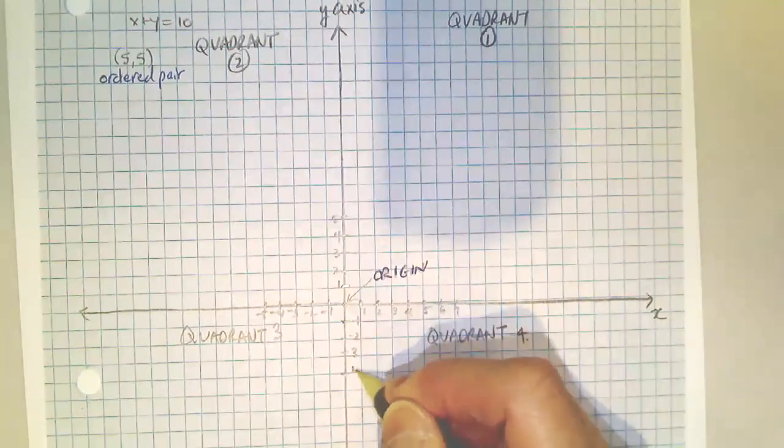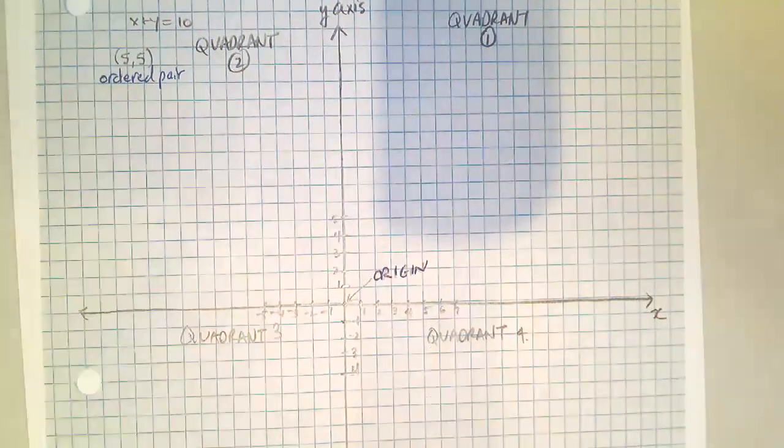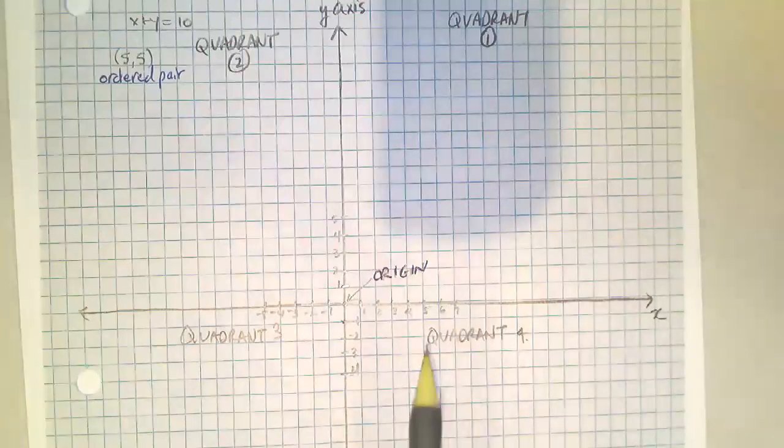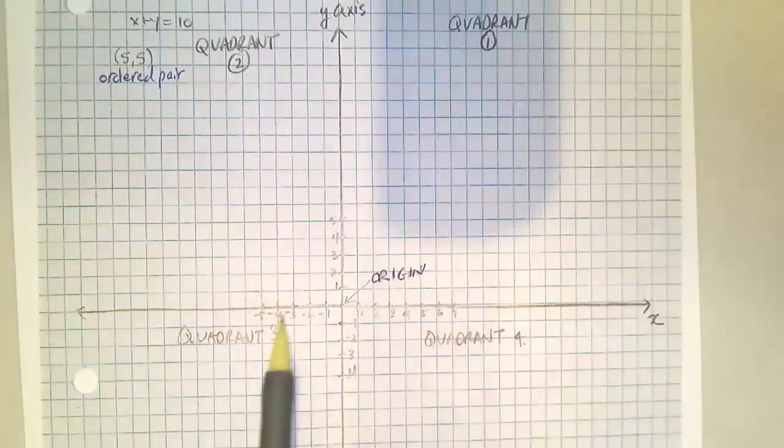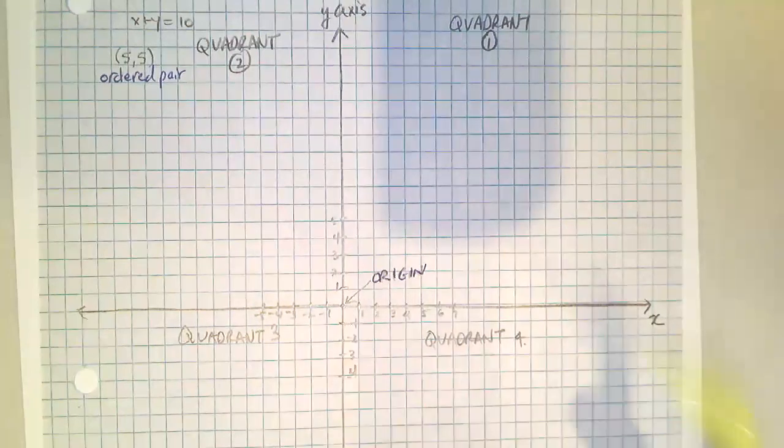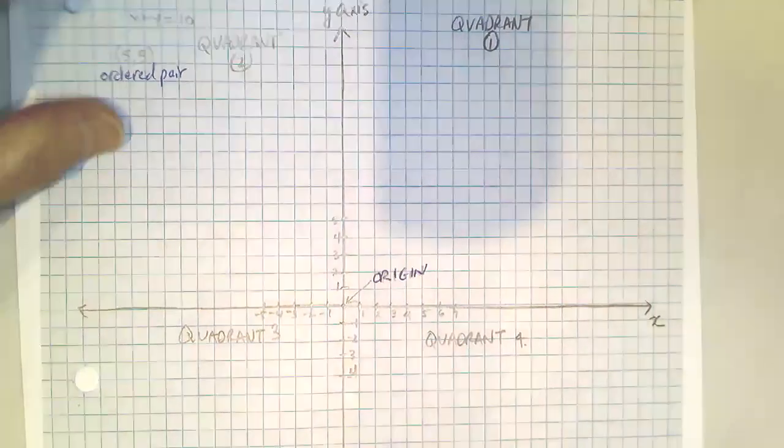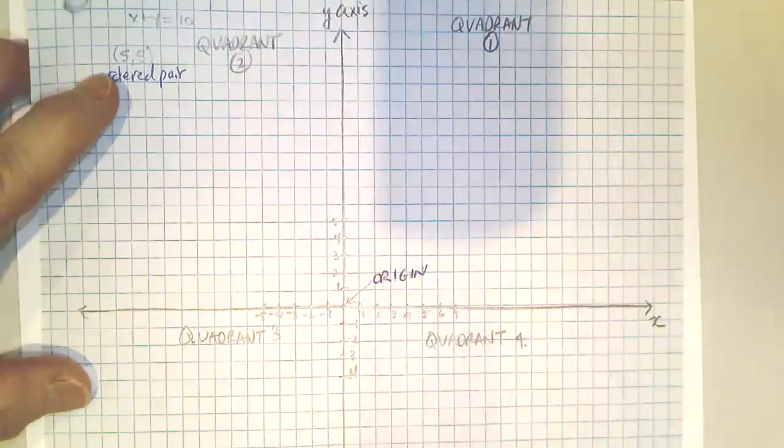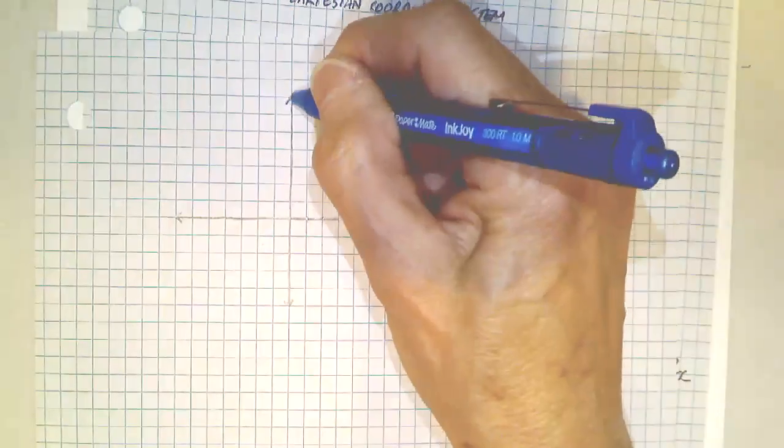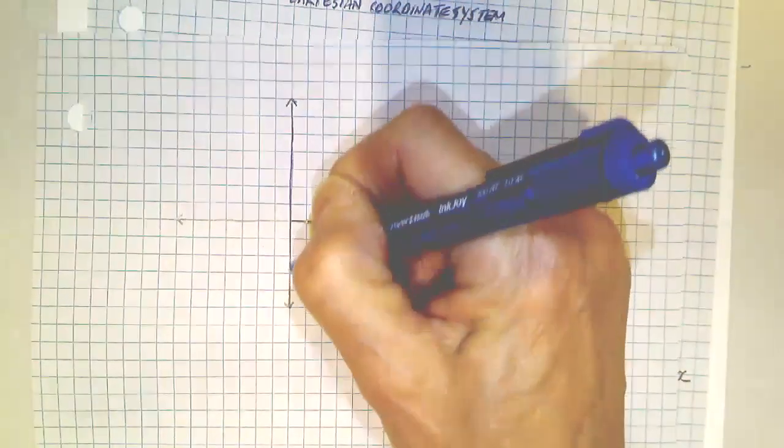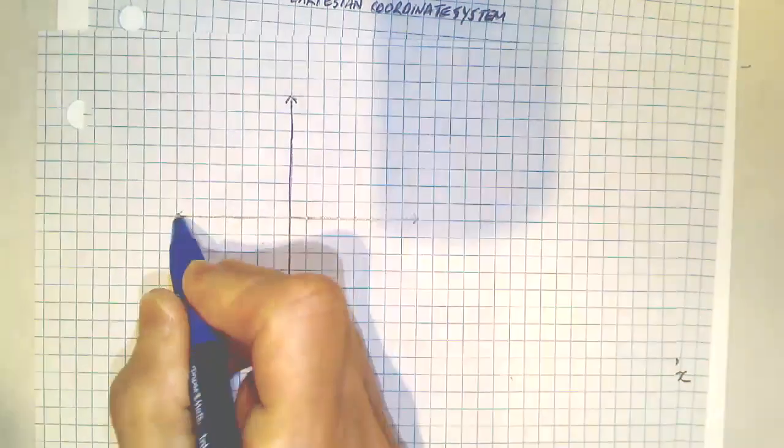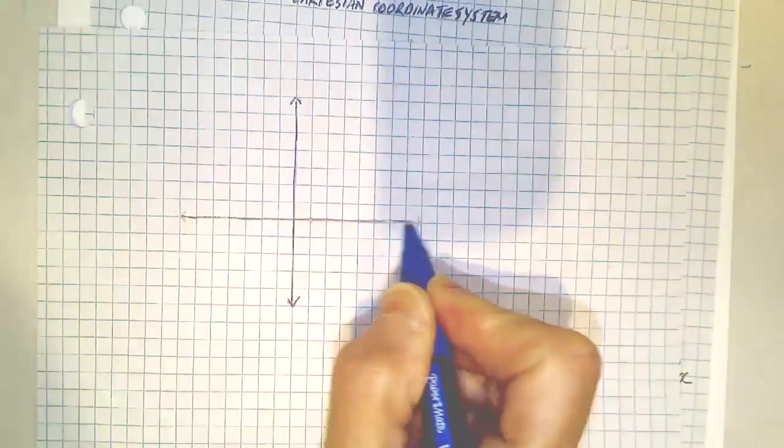Now, notice I made a huge grid, which took up my whole paper. I could have labeled my axis much higher and my Y axis. You don't always have to draw this graph, this grid quite so large. You could take a piece of paper and make a grid that's much smaller. Depending on how you're going to use it. You might not need big numbers.